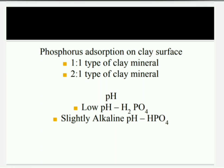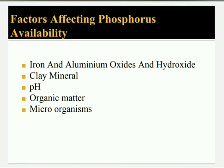Availability of phosphate ion based on pH: at low pH, primary orthophosphate is available; at slightly alkaline pH, secondary orthophosphate is available; and at moderate slight acidity, both ions are available. Organic matter enhances phosphorus sorption in soil and decreases phosphorus availability to plants due to association with sesquioxides. Microorganisms such as bacteria, fungi, and actinomycetes immobilize inorganic phosphate, thereby enhancing phosphorus availability.